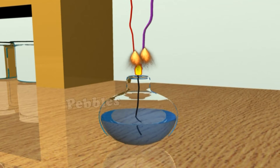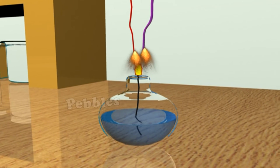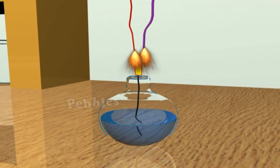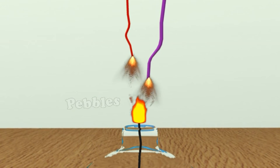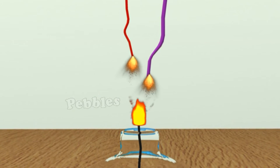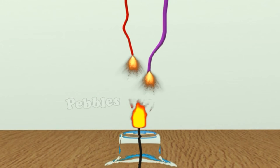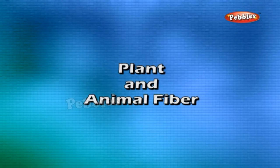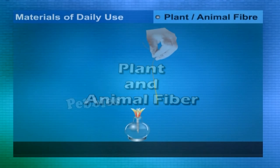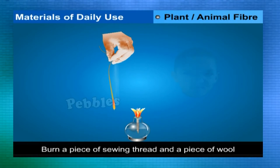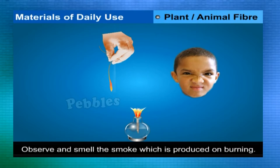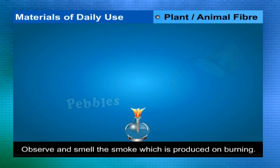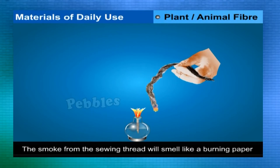Natural fiber vs. synthetic fiber: take a small piece of each of two fibers and burn them. You will notice that natural fibers burn with a flame, while synthetic fibers melt fast and then burn. To distinguish plant and animal fibers, burn a piece of sewing thread (plant fiber) and a piece of wool (animal fiber) and observe the smoke.